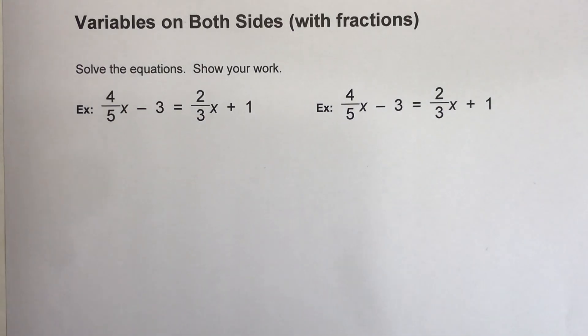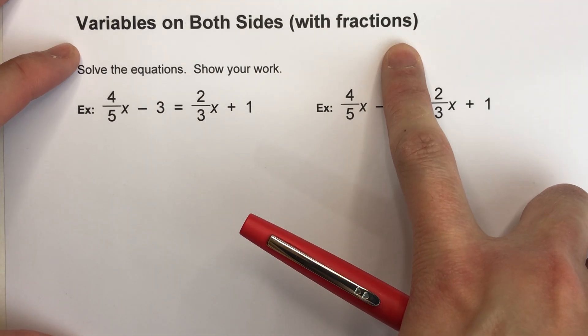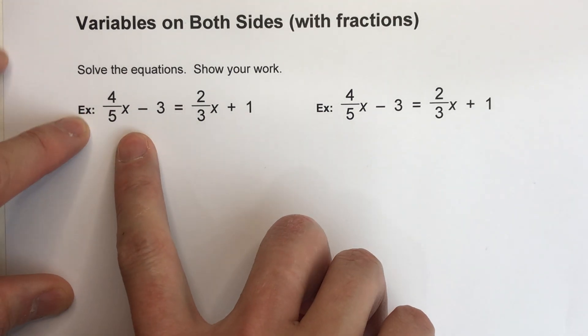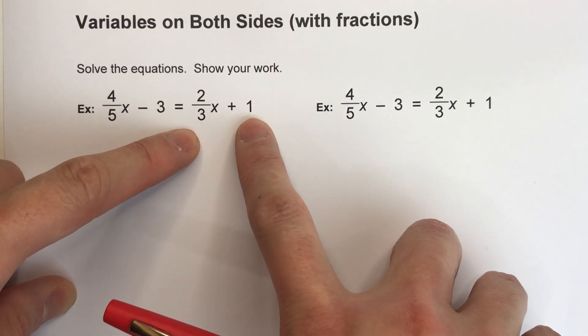Today I'm going to show you how to solve algebra equations where there are variables on both sides, but there's also fractions in them. I'm actually going to show you how to do it in two different ways. So look at this first example. It says 4/5x - 3 = 2/3x + 1.